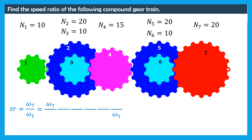Gears 1 and 7 are not in contact, and they are also not mounted on the same shaft. Thus, we do not have a direct relationship between the speeds of gears 1 and 7. To calculate the speed ratio, we need to introduce the speeds of the intermediate gears. The speed ratio is kept unchanged if we divide and multiply by omega 6, omega 5, omega 4, omega 3, and omega 2.